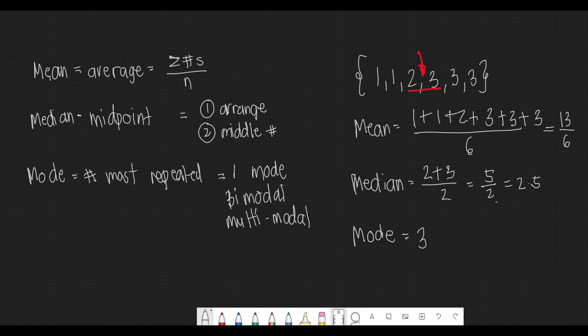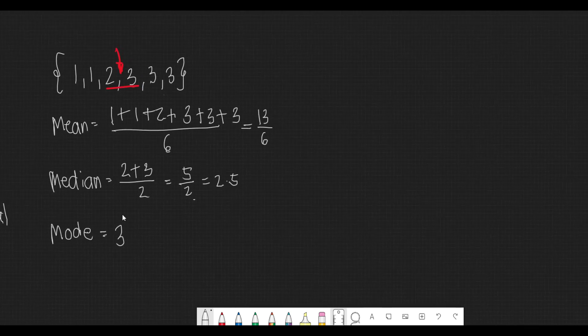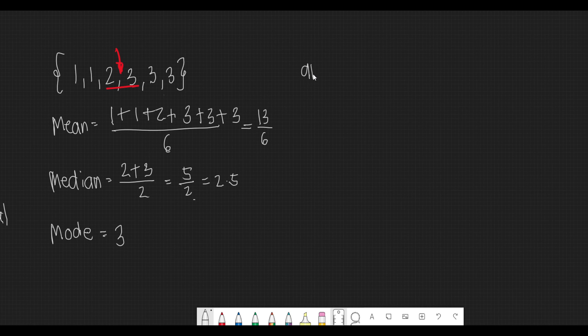And the mean that we have computed last time can also be termed as our arithmetic mean. And there are three types of mean.